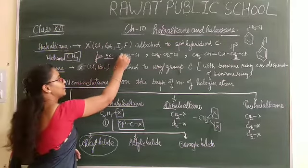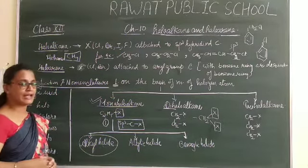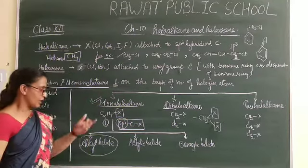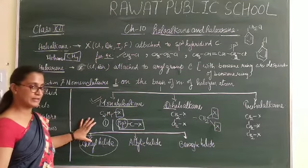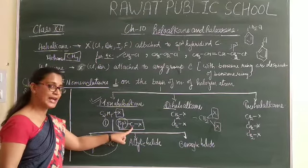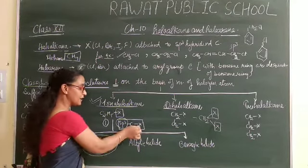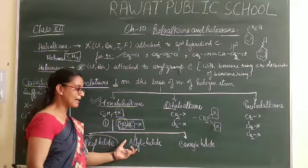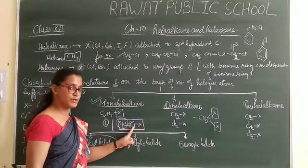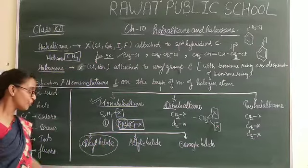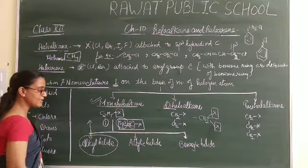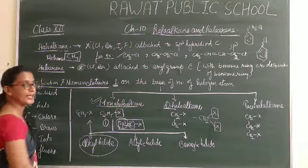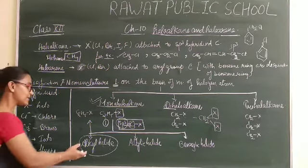For example, chloromethane is one type of Alkyl halide. Alkyl halides are when halogen groups are directly attached to carbon which are SP3 hybridized. Examples include chloroethane (C2H5Cl), chloromethane, chloropropane, bromopropane, bromobutane — these all are Alkyl halides. These Alkyl halides are further divided into different types: primary Alkyl halide, secondary Alkyl halide, and tertiary Alkyl halide.